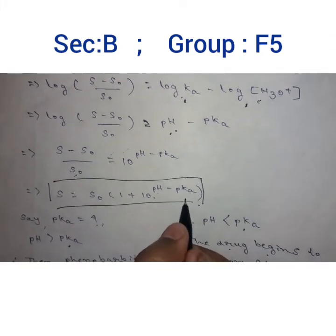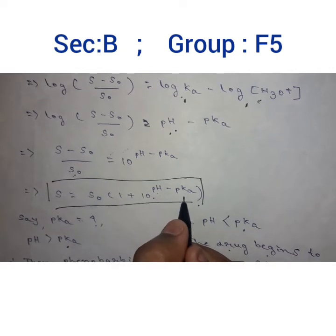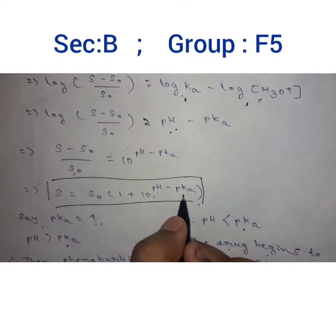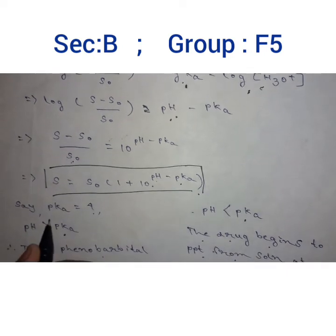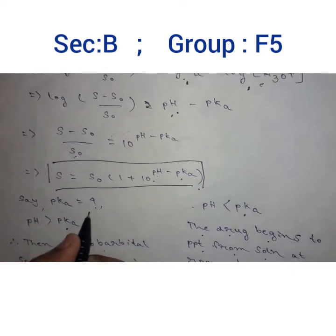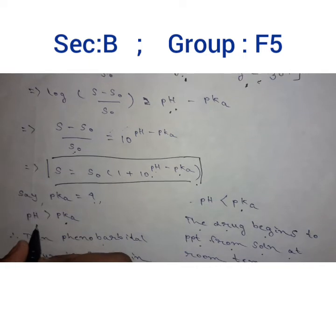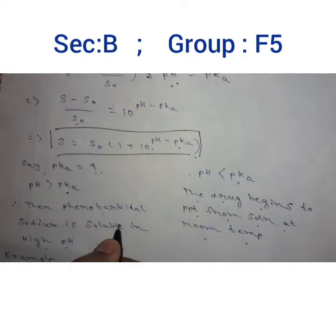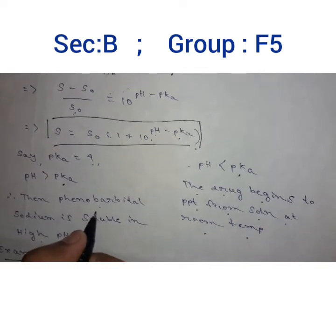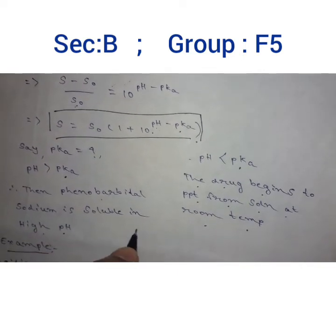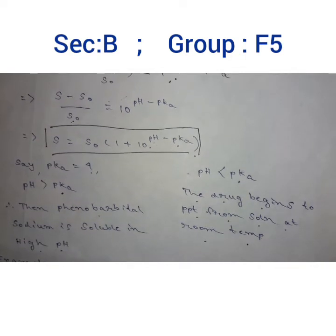Now we know that acid dissociation constant is constant for all the acids. Let's say phenobarbital solution pKa is 7.4. When the pH is higher than pKa value, the sodium salt of phenobarbital is soluble in the high pH in alkaline range.